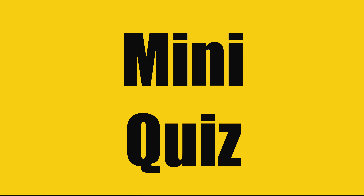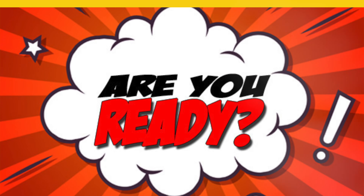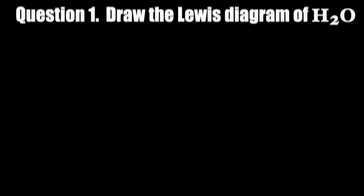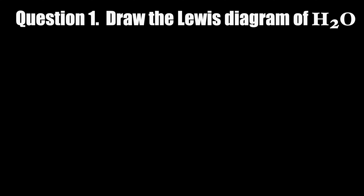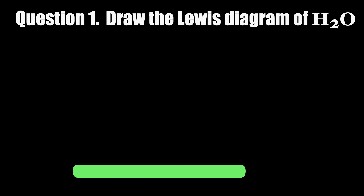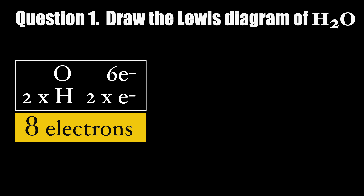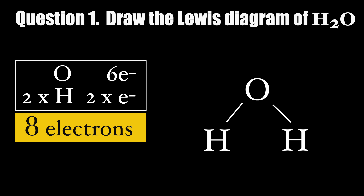Now, are you ready to take a mini-quiz? Question 1: Draw the Lewis diagram of H2O. H2O has 8 valence electrons. Oxygen is the central atom with 2 lone pairs of electrons.